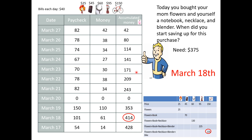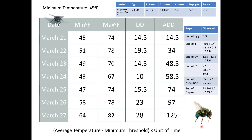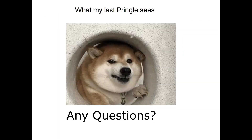This is exactly what we do with accumulated degree days: looking back in time, given all we know about how much money was made, we find when we had to start saving to meet our goal. Over the next lecture, I'll show you exactly how we do that with insects. Let me know if you have any questions.